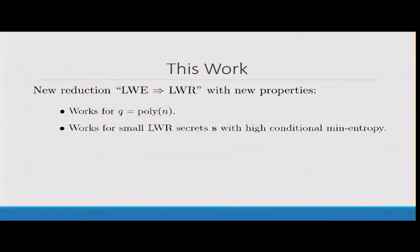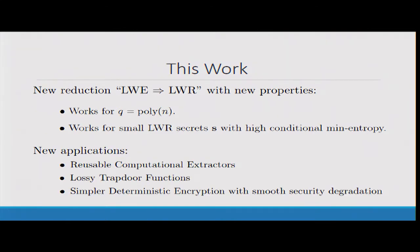In this work, we develop a new technique based on a lossy sampler, which we can use to get a new reduction showing that learning with errors implies learning with rounding. Some of the properties we get is that it actually goes through also for polynomially sized Q. Moreover, as an added bonus, we also get that it works for small secrets with high conditional min entropy.